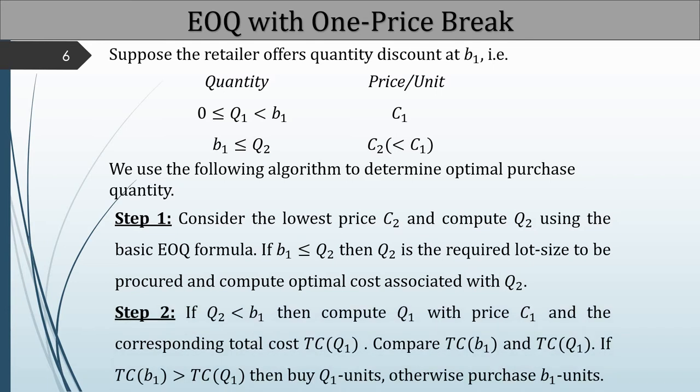Step 2: if Q2 is less than B1, then compute Q1 with price C1 and the corresponding total cost TC(Q1). Compare the total cost of procuring Q1 units with the total cost of procuring B1 units — that is, compare TC(B1) and TC(Q1). If TC(B1) is greater than TC(Q1), then buy Q1 units; otherwise purchase B1 units.